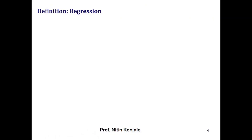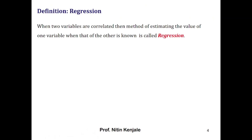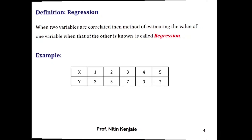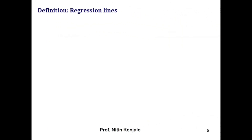First, the formal definition of regression: when two variables, say x and y, are correlated, the method of estimating the value of one variable when that of the other is known is called regression. In simple terms, if x is known, then finding y is called regression. For example, look at this table of data — x values are given and corresponding y values are also given, but for x equal to 5 the y value is missing. The process of finding that y value is known as regression.